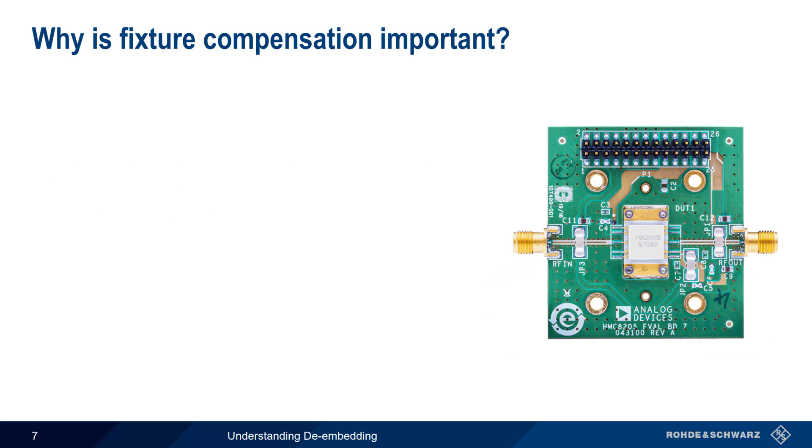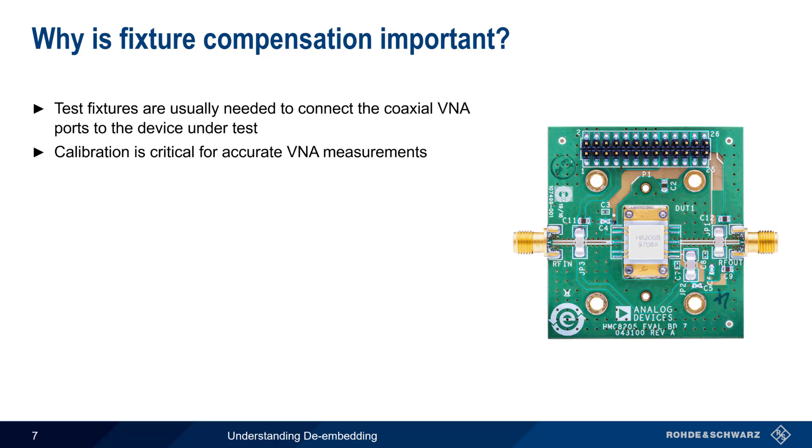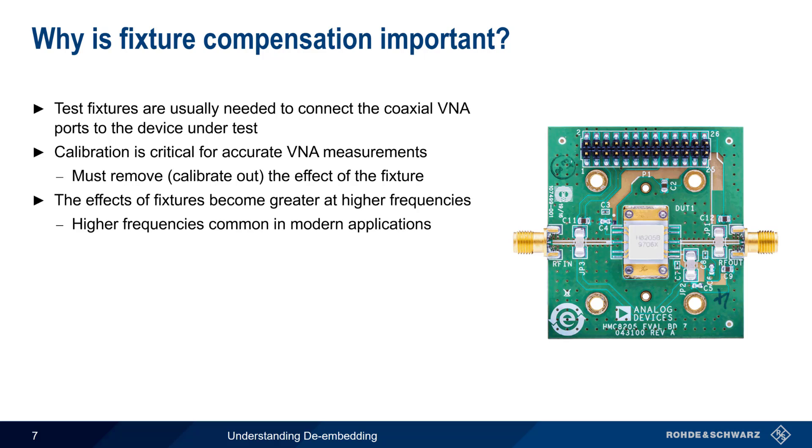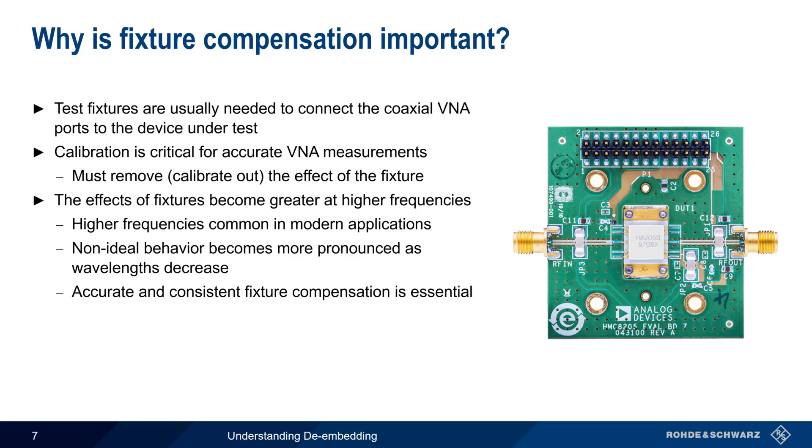So why is fixture compensation important? Clearly, we need some way of connecting the coaxial VNA ports to the device under test, even when the device under test is not connectorized. And as you should already know, calibration is critical for accurate VNA measurements. So it should be clear why we need a methodology or procedure that can compensate for, or calibrate out, the effects of the fixture. This need for fixture compensation is especially true at higher frequencies, and high frequencies are quite common in many modern applications. As frequency increases, wavelength decreases, and non-ideal behavior becomes more noticeable or more pronounced. For these reasons, accurate and consistent fixture compensation has become essential as applications move to these higher frequencies.